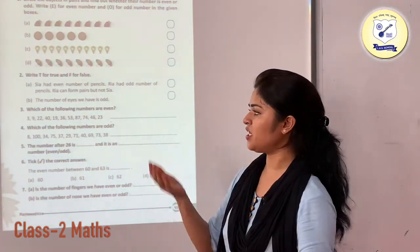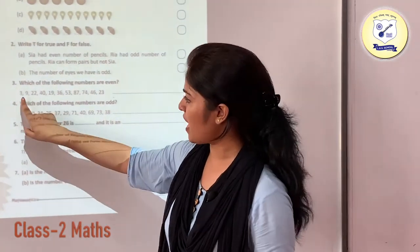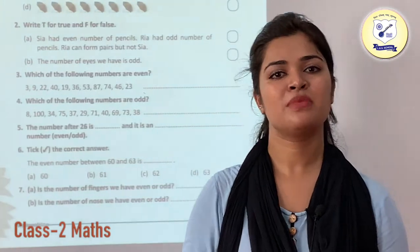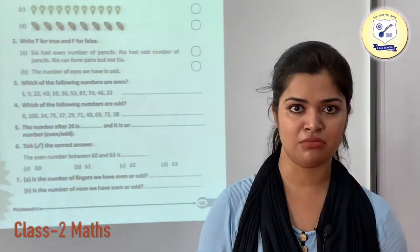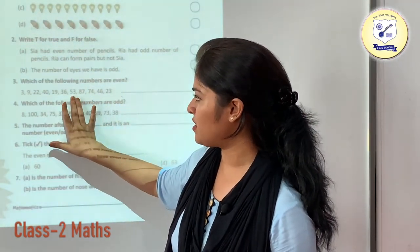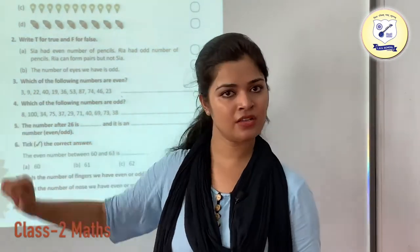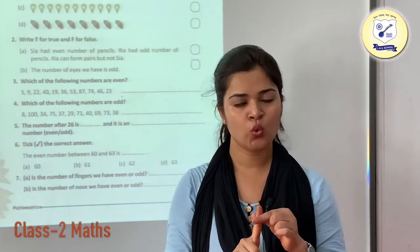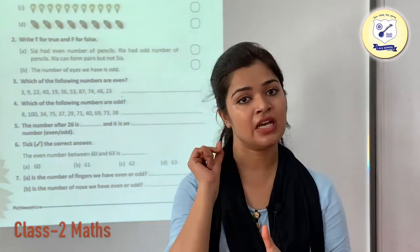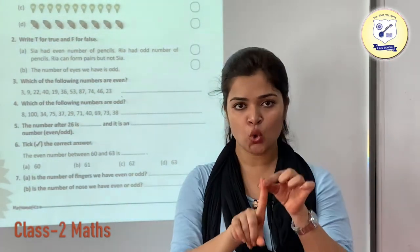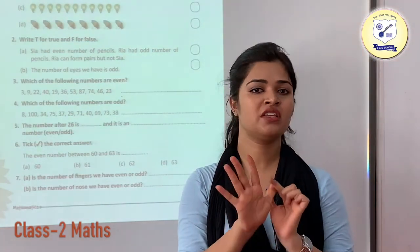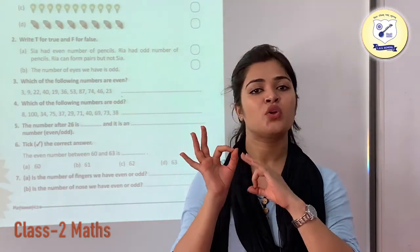Which of the following numbers are even? To check whether a number is even or odd, just check the ones place of that number. The ones place digits here are: 3, 6, 4, 7, 3, 6, 9, 0, 2, 9, and 3. If the ones place of any number is either 2, 4, 6, 8 or 0, then that number is going to be your even number. Remember: 2, 4, 6, 8 and 0 — if the number has any of these five digits at the ones place, it is your even number.